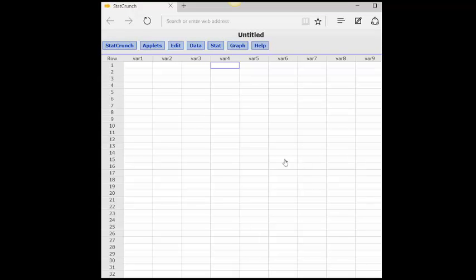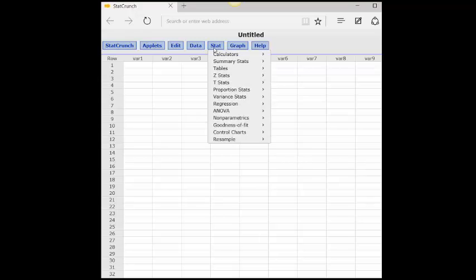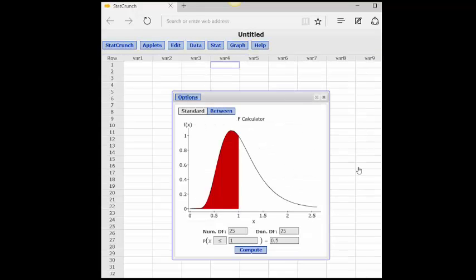The last calculator I want to show you is for the F test. We'll go to Stats, Calculators, F, and here we have the F distribution. Remember that the F distribution is not symmetrical, so we have to determine separately the area under the curve for a left-tail test or a right-tail test. In this test, we also need to know the numerator and the denominator degrees of freedom, and you would put in the values you have. I'm going to leave the 25.25 I have here.